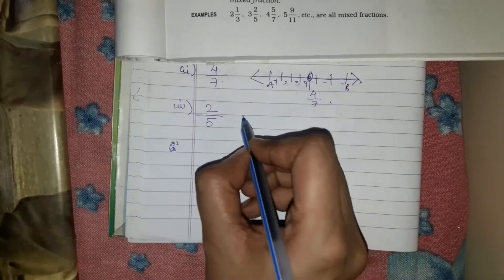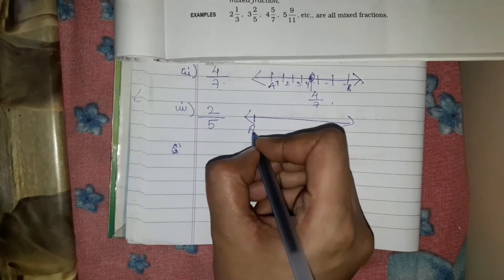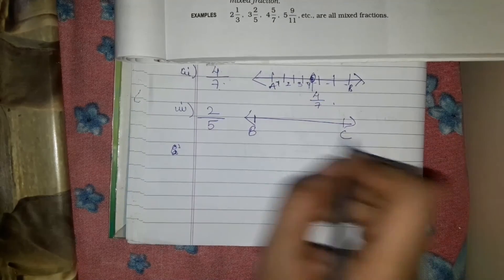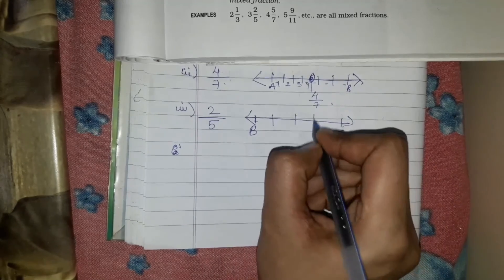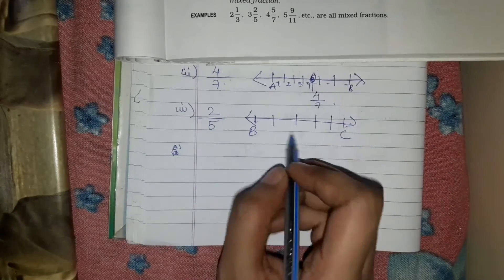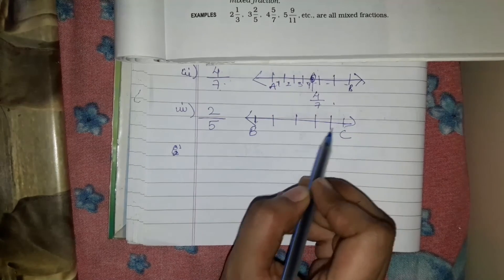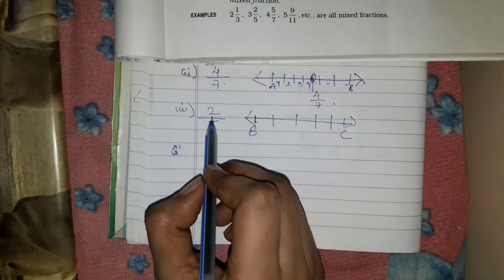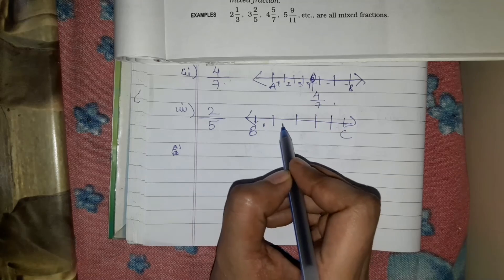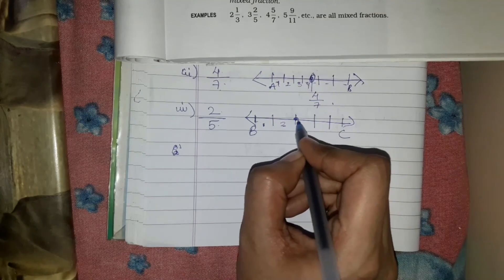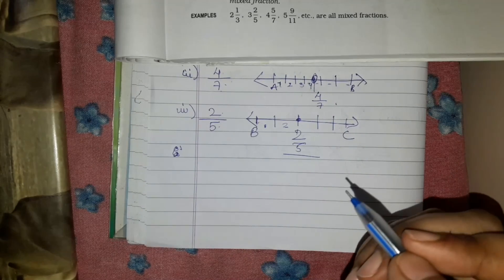For 2 upon 5, mark points B and C and divide the B to C portion into 5 equal parts. Count: 1, 2, 3, 4, 5 — 5 parts confirmed. Now count the first part, second part — mark that point as 2 upon 5. This is the representation of a fraction on the number line.